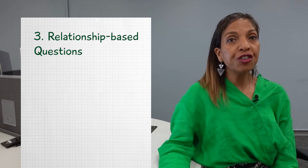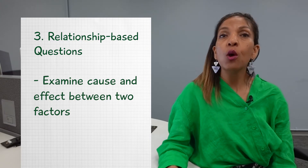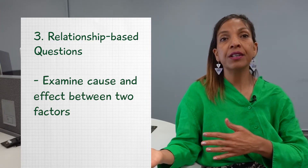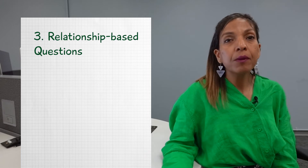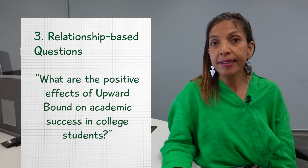Third, relationship-based questions, which examine the cause and effect or impact of change one factor has on another. Something like: what are the positive effects of Upward Bound on academic success in college students? Research questions consider relationships between factors. They require investigation and evaluation. Your question may have multiple answers depending on the perspective or argument. Your job is to persuasively argue the answer to your question.